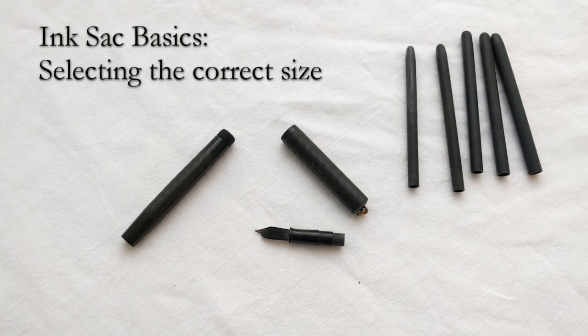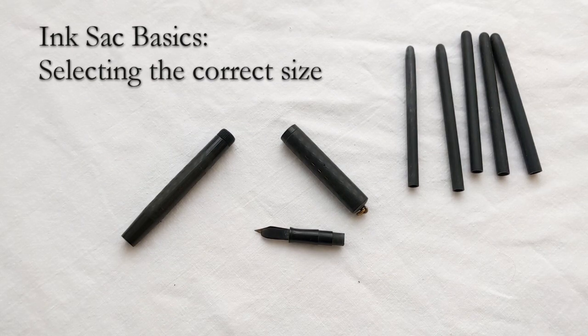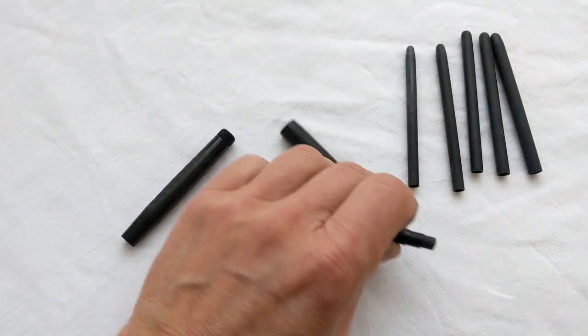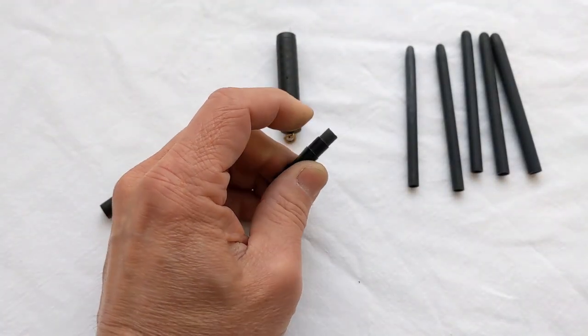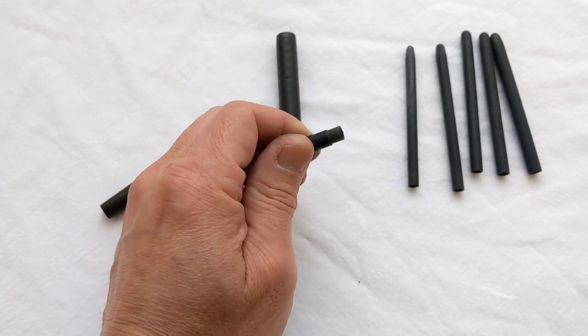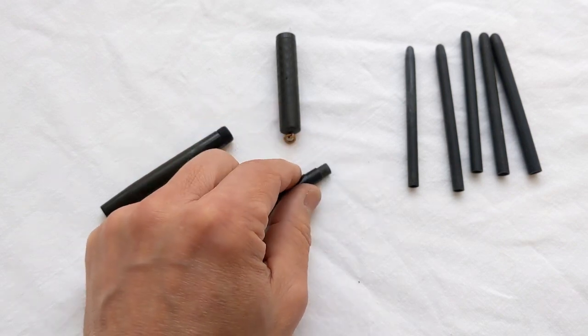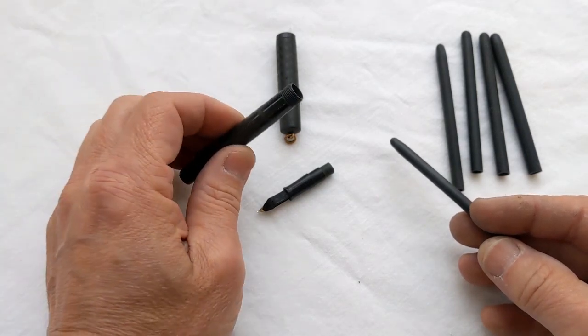One of the most widespread misconceptions about sack sizing for vintage pens is that sack size should be determined by the fit on the sack nipple, or sack peg as the Brits call it. That's not the way you do it. You have to size it by the interior dimensions of the barrel.